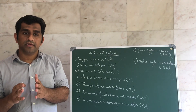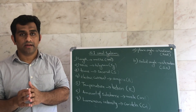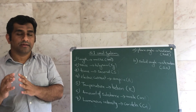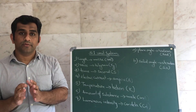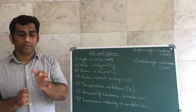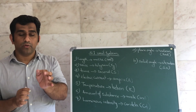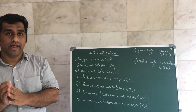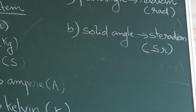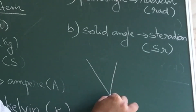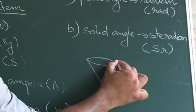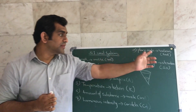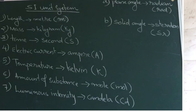For plane angle, consider the angle subtended at the center of a circle by an arc equal in length to the radius R. That angle is measured in radian. For solid angle, think of a cone shape — like a corn ice cream cone. The angle at the tip of that cone shape is called a solid angle, and its unit is steradian.